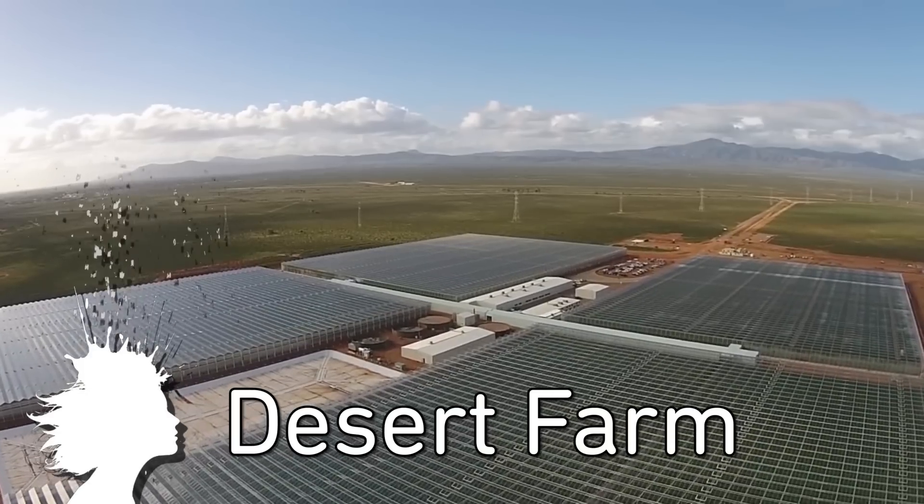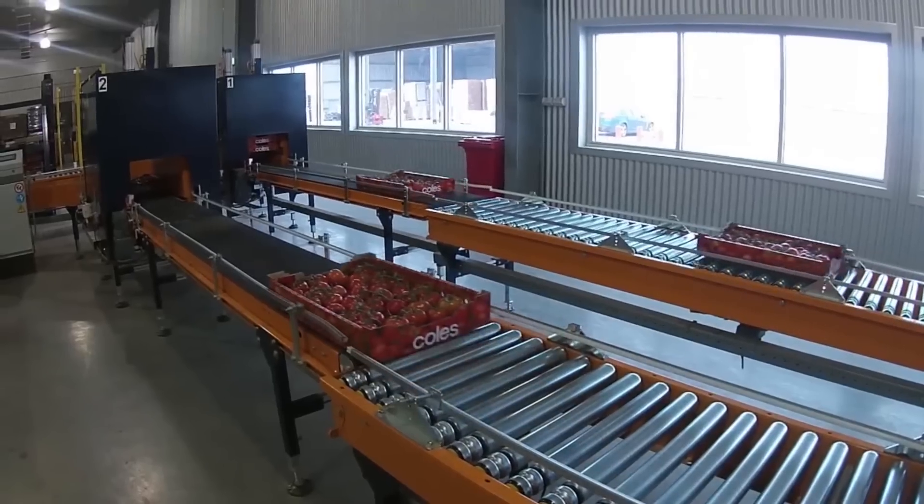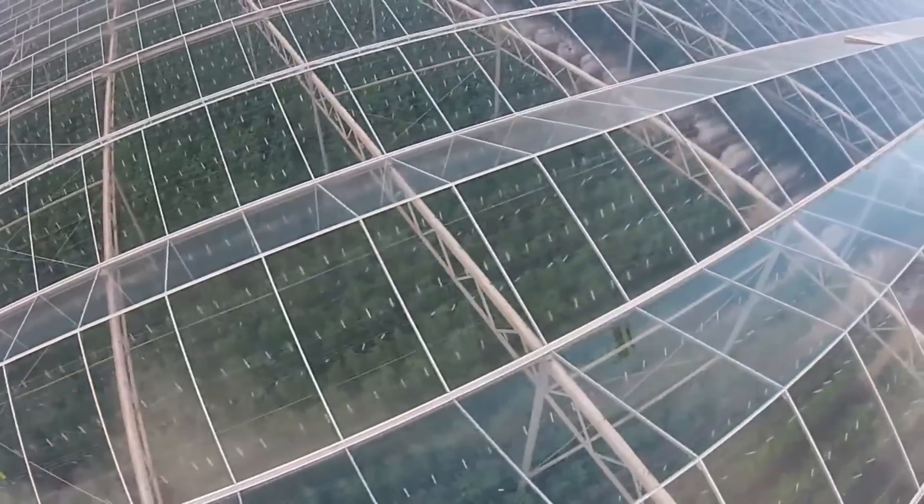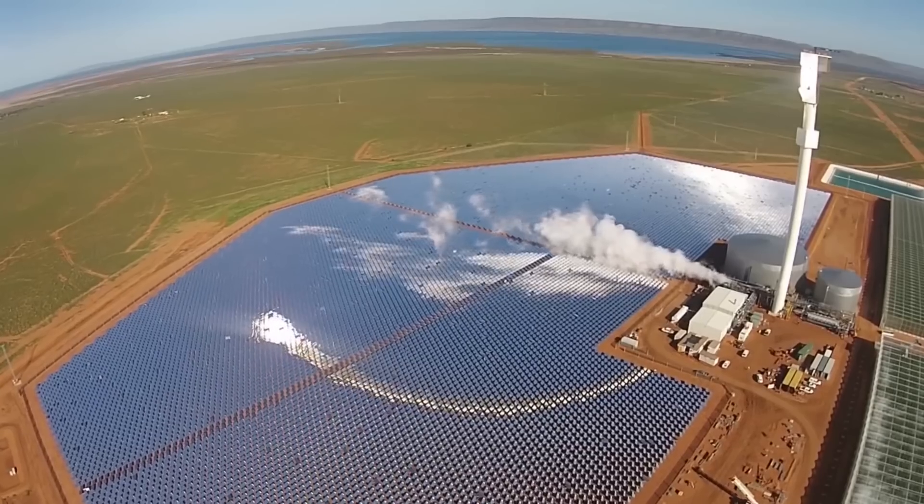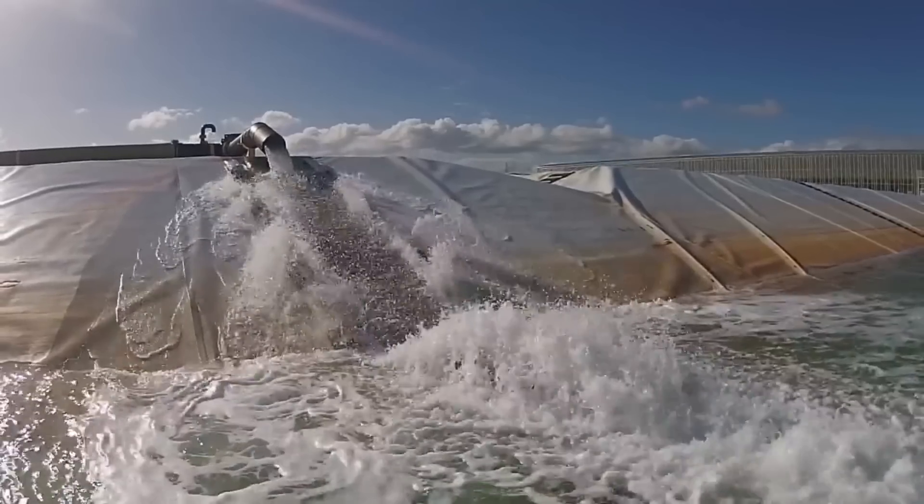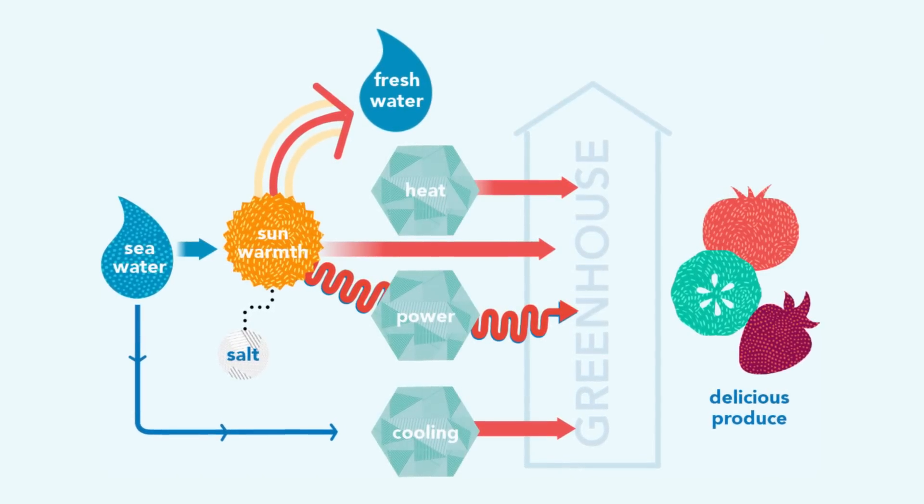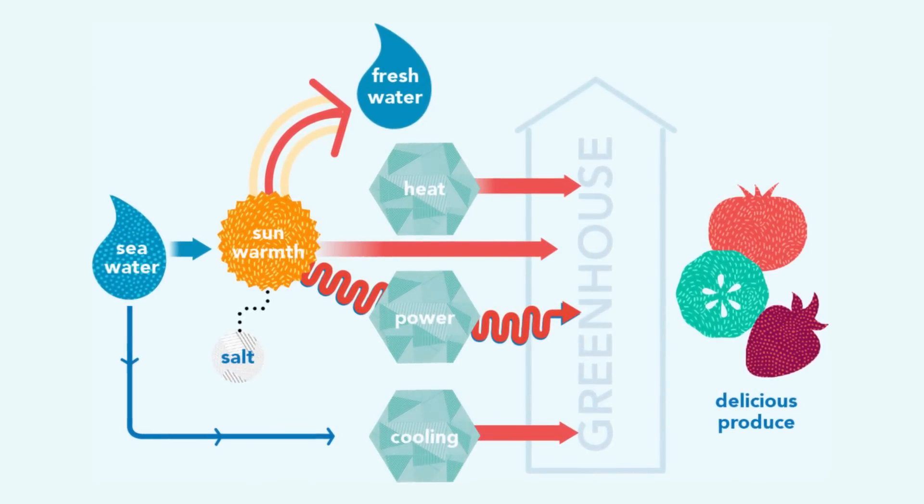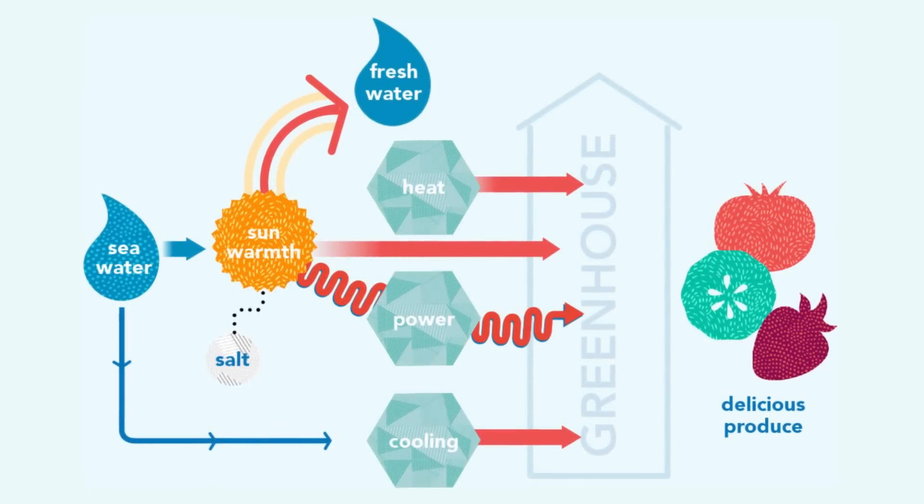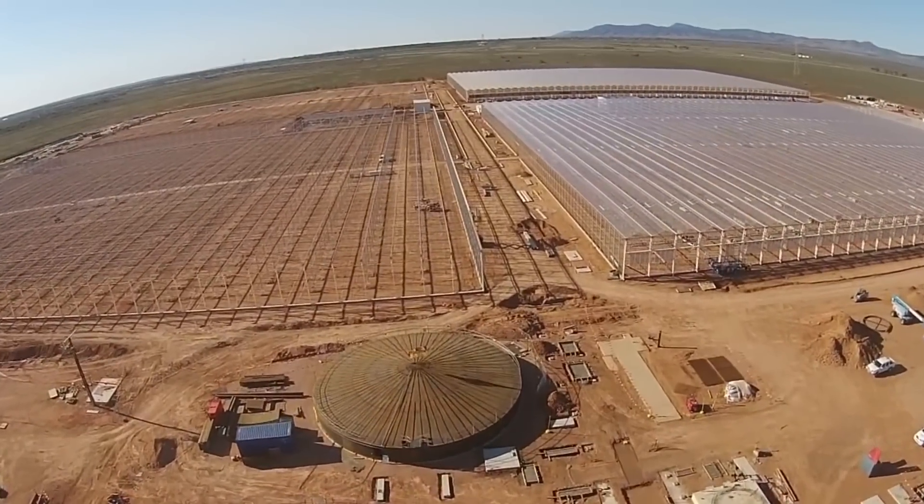Sundrop is the world's first farm growing vegetables in the desert using seawater. 15,000 tons of tomatoes a year are now being grown in Australia using 23,000 mirrors that generate solar power and seawater from the Spencer Gulf. The solar power is used to desalinate or remove the salt from the seawater to create freshwater for the crops. And they're now planning to create these farms in Portugal and the United States.